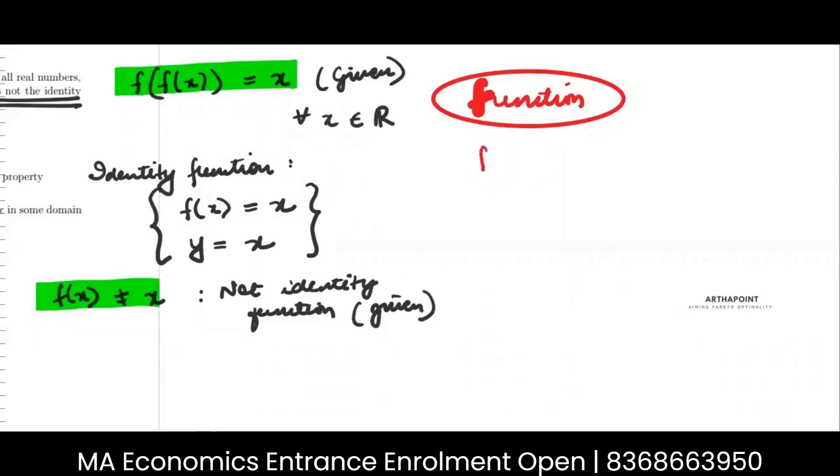So let's say that I take this function where f of x is equal to 1 by x. It is not equal to x, so it is not an identity function.